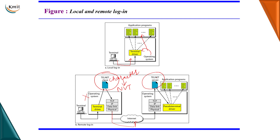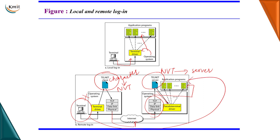Once received at the remote computer or server side, we have a Telnet server program. From the TCP/IP protocol, the character set is given not directly to the operating system but to the Telnet server. The Telnet server converts the NVT character form into the form suitable for the remote computer, and this is given to a pseudo terminal driver. The pseudo terminal driver gives the character set to the operating system, which then invokes the appropriate application program for that character set. This is how a local terminal logs in to the remote computer using the Telnet client-server program.